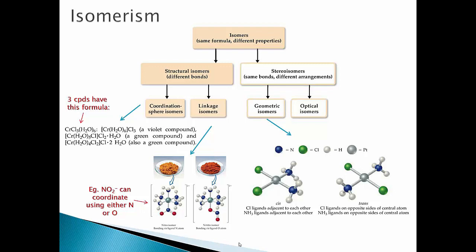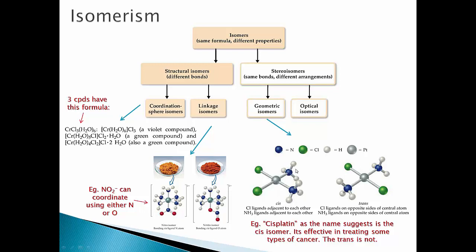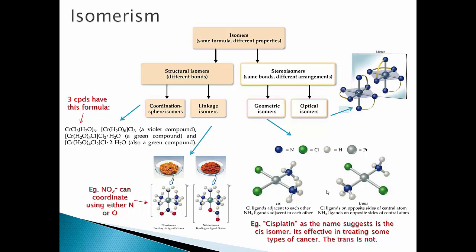Stereoisomers include geometric cis-trans isomers: cis puts groups on the same side, trans on opposite sides. A critical example is cisplatin — in the cis state it is an effective cancer treatment, whereas in the trans state it is not. Optical isomers are enantiomers with mirror symmetry that are non-superimposable, like your hands: you cannot lift them up and place one on top of the other to match.